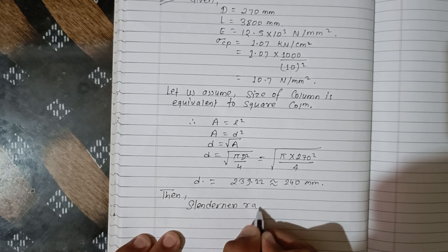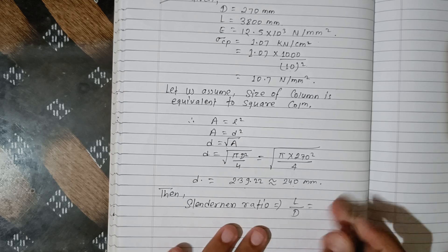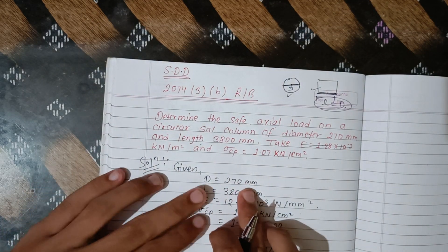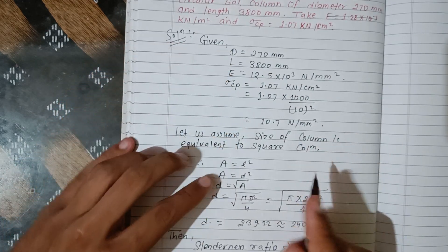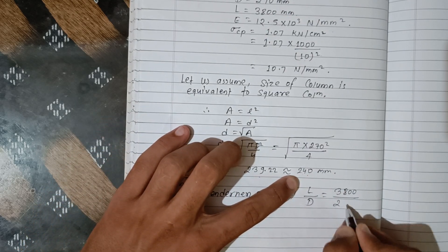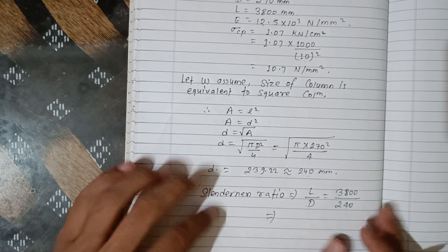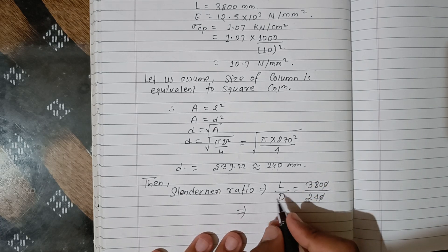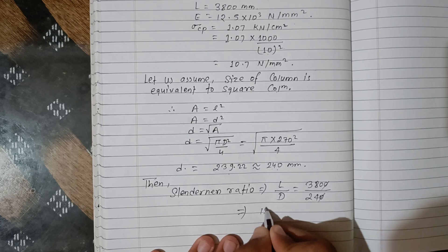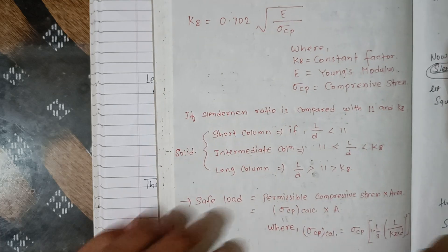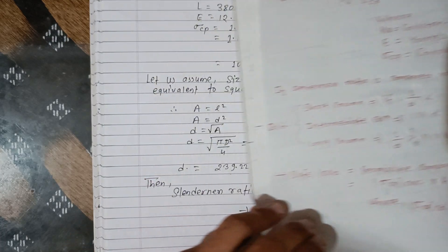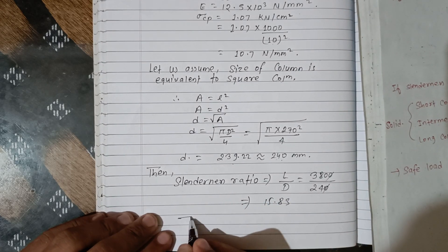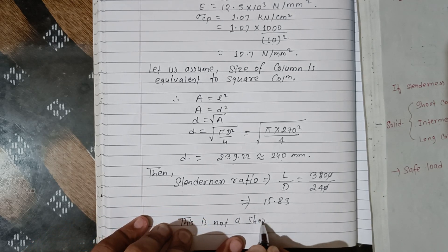Now calculate the slenderness ratio: L by D = 3800 / 239.22 = 15.83. Now check the condition for short column: L/D less than 11. Since 15.83 is greater than 11, this is not a short column.